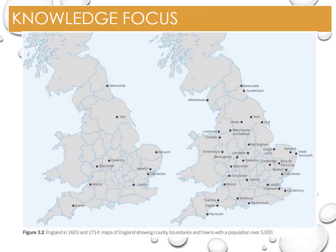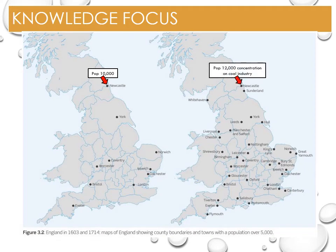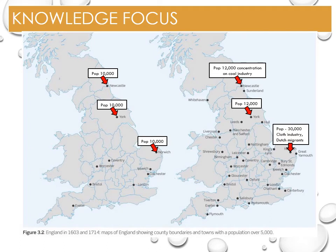The maps show how the distribution of towns changed over the 17th century. On the left are all the towns with a population of over 5,000 in 1603; on the right, the towns with a population of over 5,000 in 1714. In 1603, Newcastle had a population of 10,000, and by 1714 the population had grown to 12,000 with a concentration on the coal industry. Like Newcastle, York saw its population grow from 10,000 to 12,000. Norwich also saw growth, however this was much larger — in 1603 Norwich had a population of 10,000, and by 1714 its population had exploded to 30,000, including large numbers of Dutch migrants concentrating on the growing cloth industry in Norfolk. The cloth and textile manufacturing also impacted on Ipswich, with a population growth from 4,000 in 1600 to 7,500 in 1680.